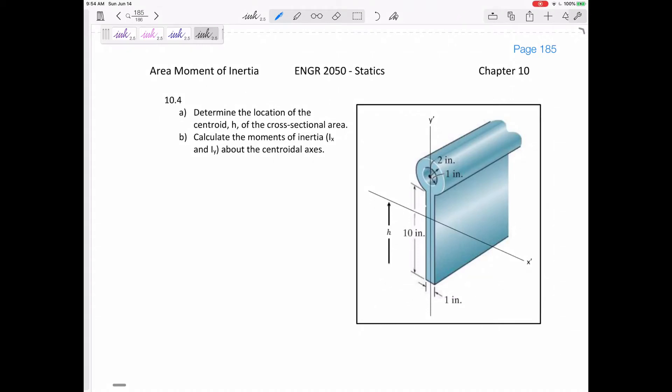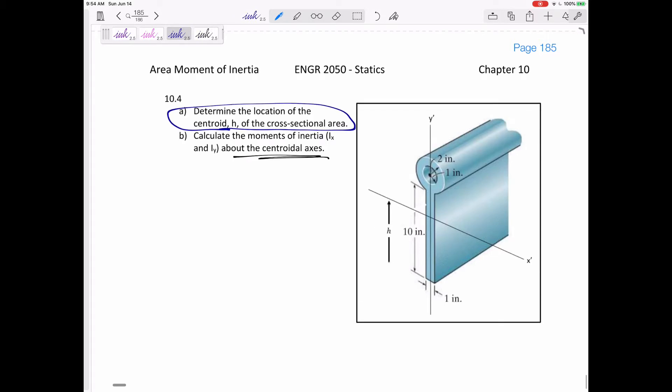Okay, so let's find the area moment of inertia about the centroidal axis. We've done this one already this semester. So part A, if you haven't done this, make sure we can go back. Sometimes you might need to find the centroid of the cross-sectional area before you can find the moment of inertia about the centroidal axes.